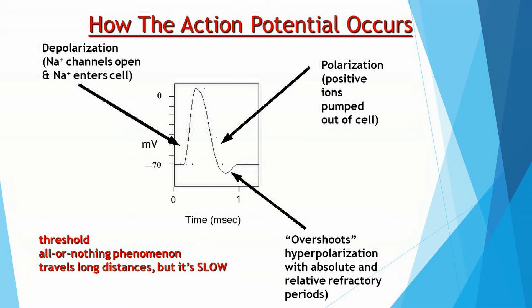That little portion of the action potential where it overshoots is called hyperpolarization — it's extra-polarized. There are two vocabulary terms associated with this period of hyperpolarization: the absolute refractory period and the relative refractory period.